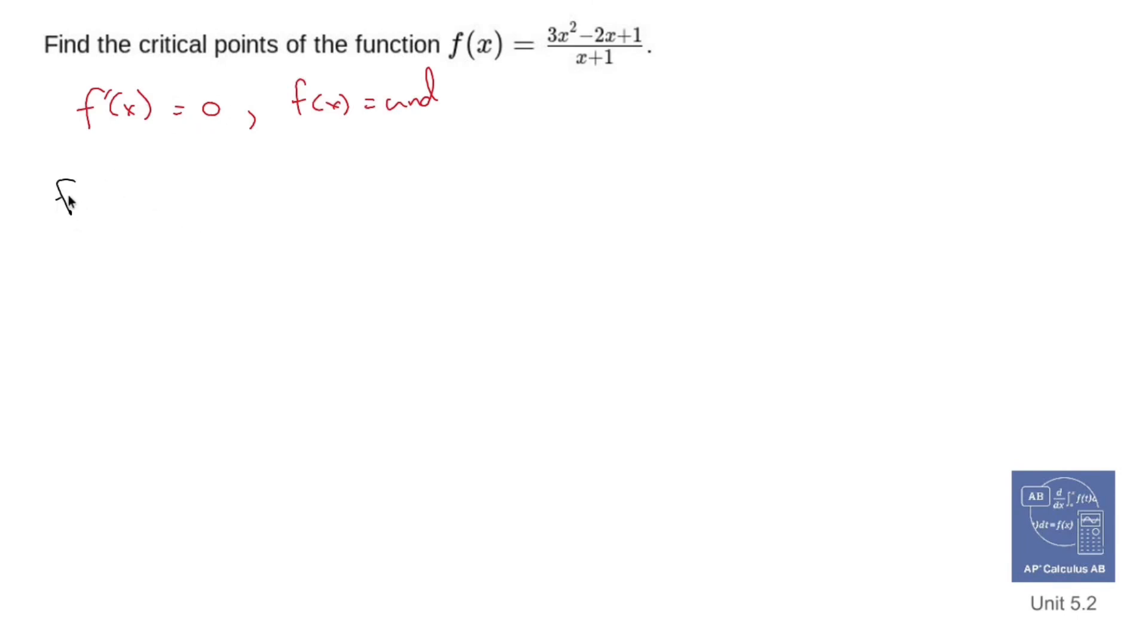Now f prime of x requires our good friend the quotient rule. That's right, u prime v minus v prime u all over v squared. So let's find the heavy duty stuff. U prime is going to be power rule, the derivative of the numerator, so 6x minus 2. V prime is going to be the derivative of the denominator, so just 1. And then v squared is going to be x plus 1 squared.